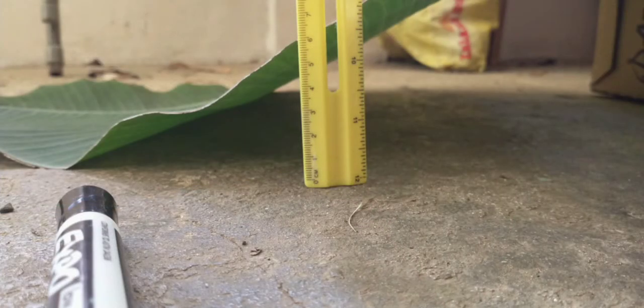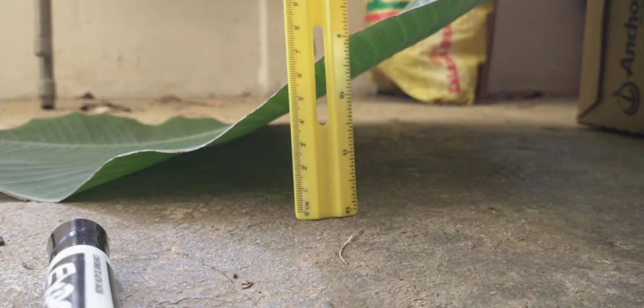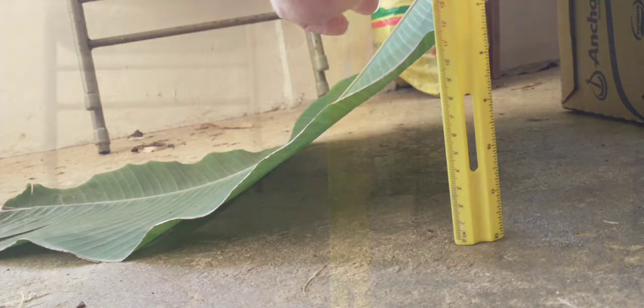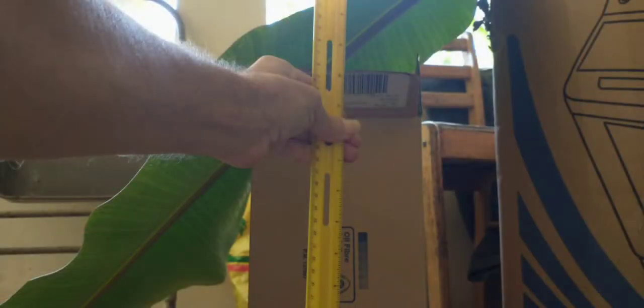I'll be measuring vertically, straight up from the floor, 5, 10, 20, 30, 40, 50 centimeters. The key is measuring vertically. I want to know the vertical, direct drop height, the vertical drop height, not the distance along the banana leaf.